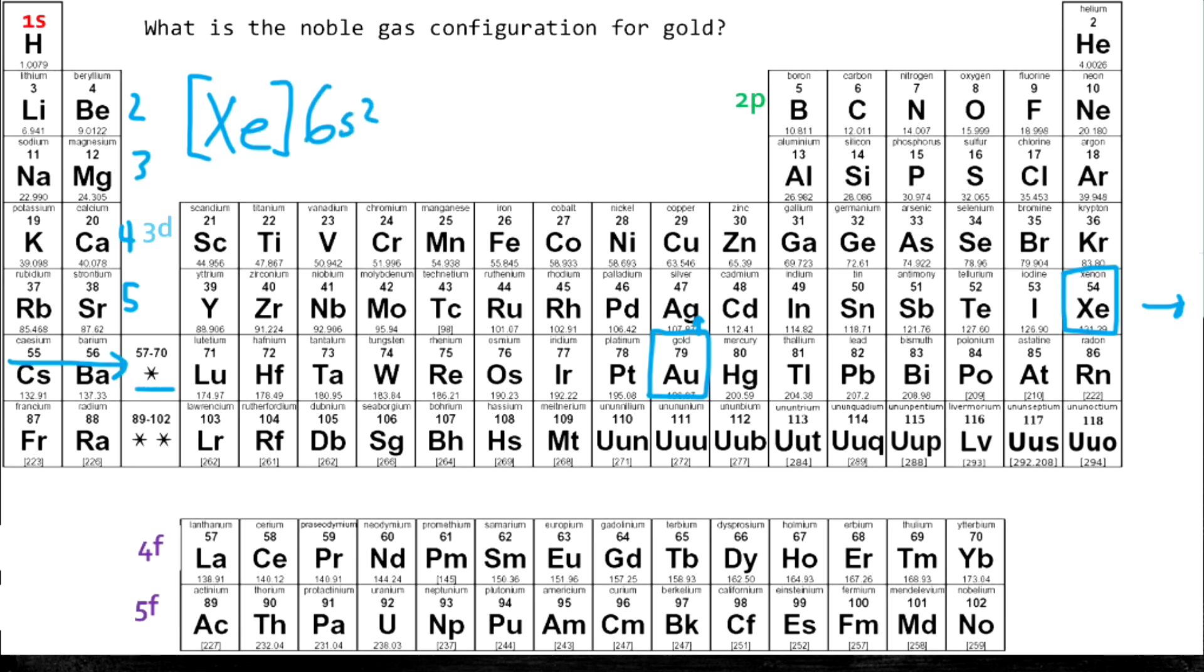And then you notice we go into this little box with the asterisk. And it says 57 through 70. That means we're going into the 4f. And so here's the 4f right here. And we're going all the way through the 4f. So it turns out there's 14 elements in that 4f row. And 14 electrons can fit into the f orbital. So we write 4f and then a 14 because it's full.